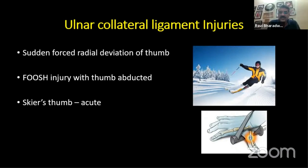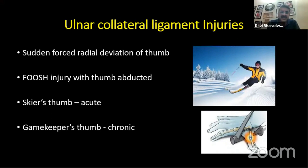There is a sudden abduction injury to the thumb and the ulnar collateral ligament tears. The term gamekeeper's thumb is reserved for chronic injuries — initially reported by Campbell in a series of 24 Scottish gamekeepers who were wringing the necks of rabbits. Skier's thumb refers mainly to acute cases.